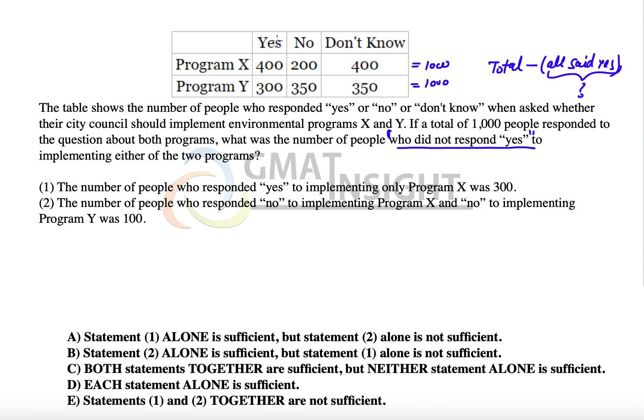This is the column that interests us - out of this 400 and 300, we need to know how many are common to answer this particular question. Let's see the first statement.